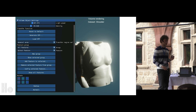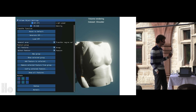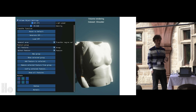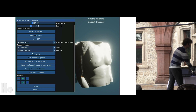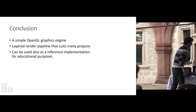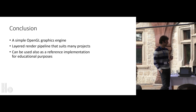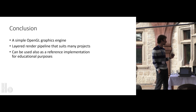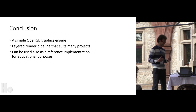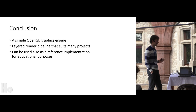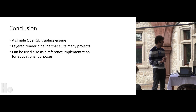ImGui is an open source project that allows you to easily create nice interfaces for applications such as the visualization project, where you don't really want to spend much time programming the actual menu system. To conclude, I created a simple OpenGL graphics engine with a layered render system, which allows adding multiple layers that get composited, and you can combine many different pipelines. It can be used as a reference implementation for educational purposes and to implement research projects.